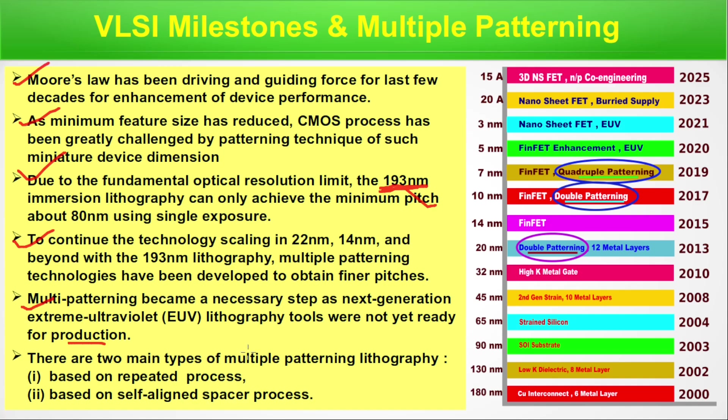There are two main types of multiple patterning lithography: one based on a repeated process and one based on a self-aligned spacer process.